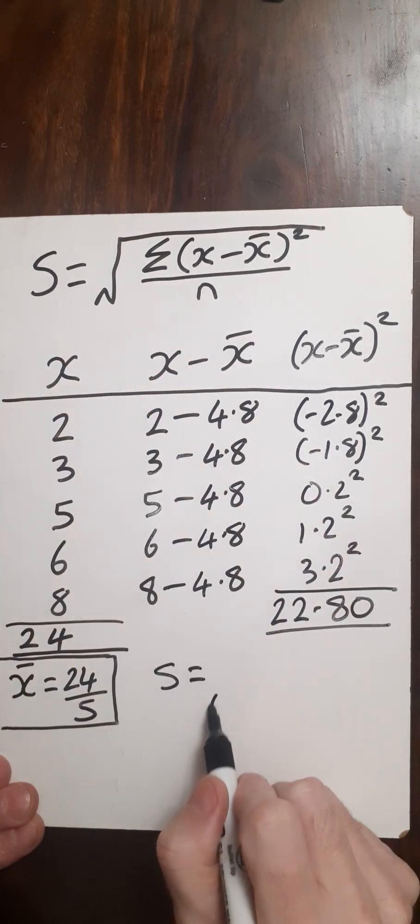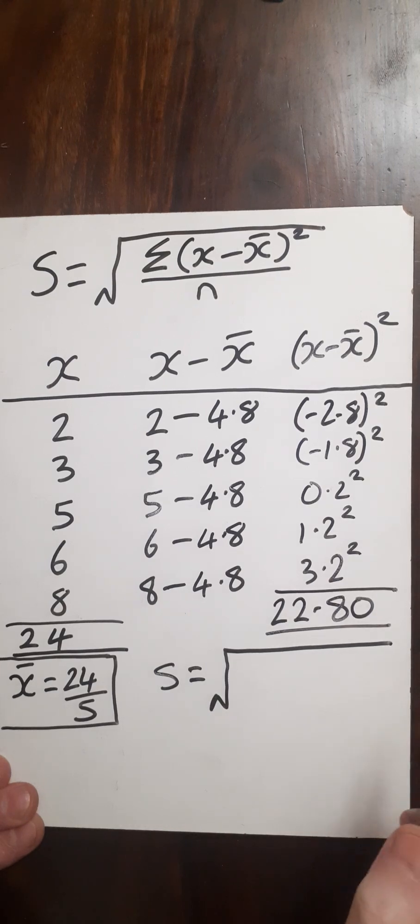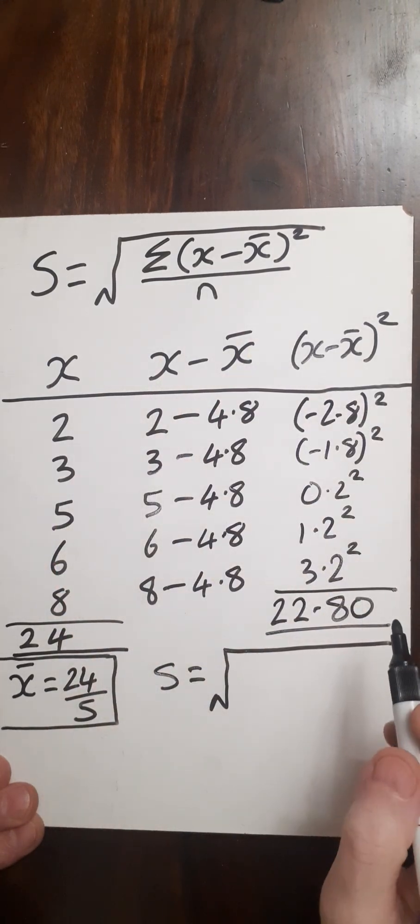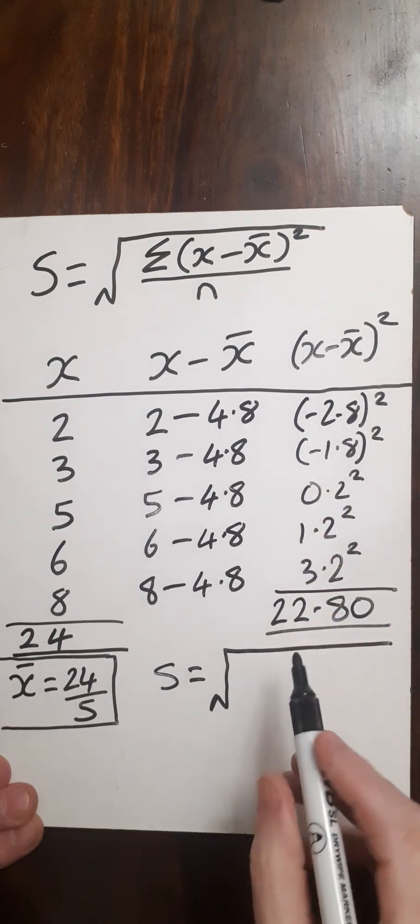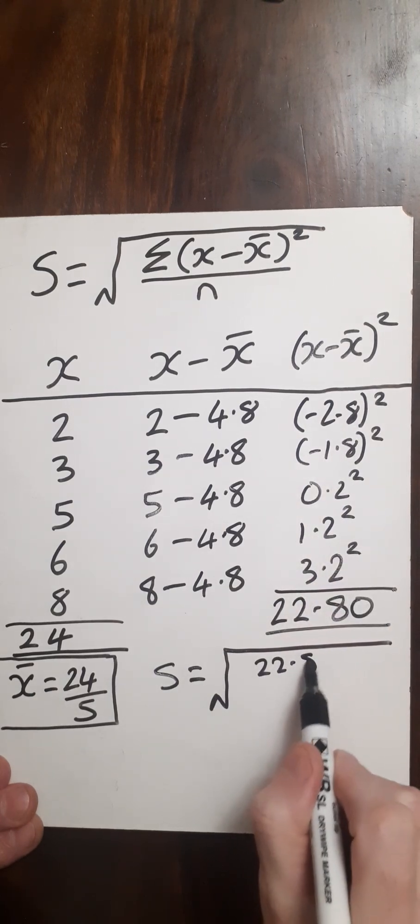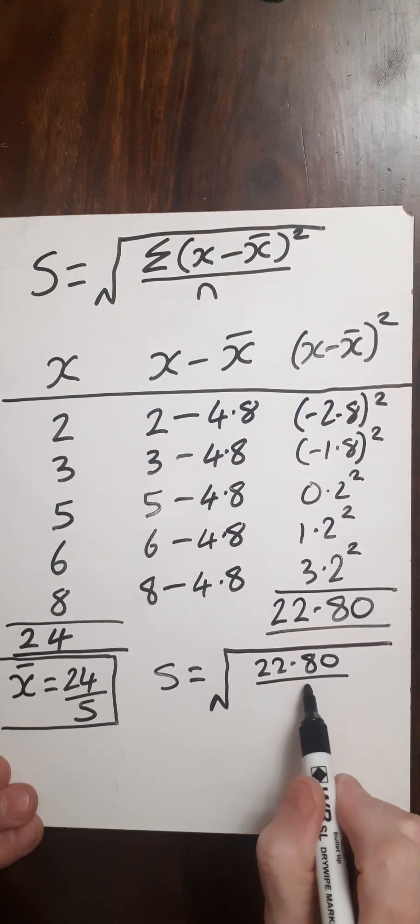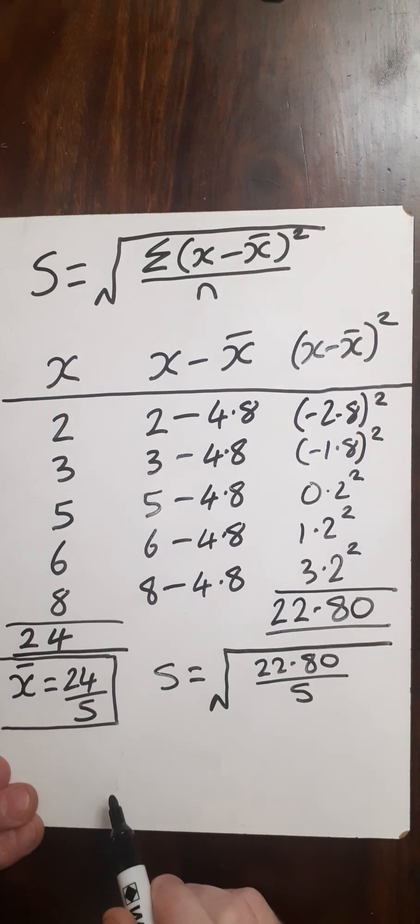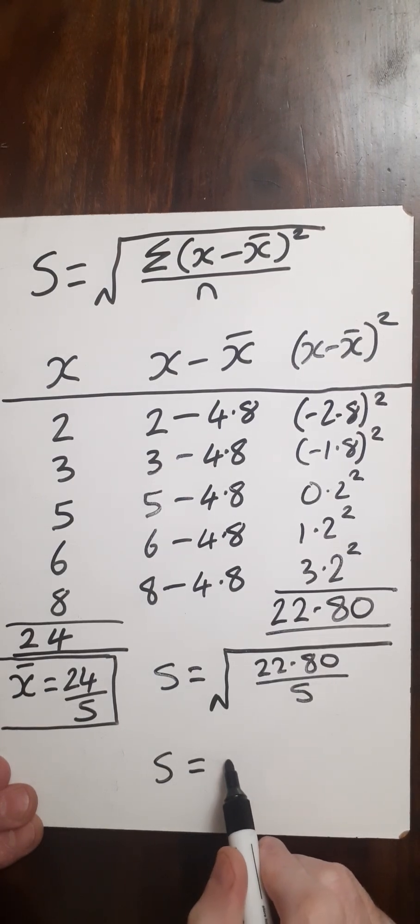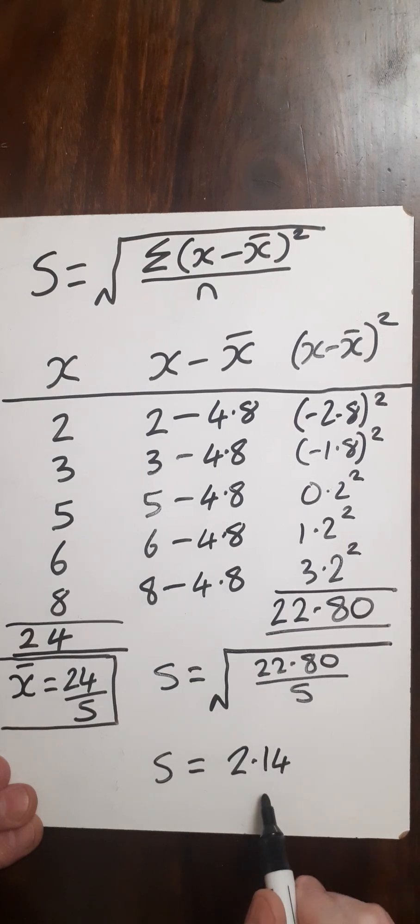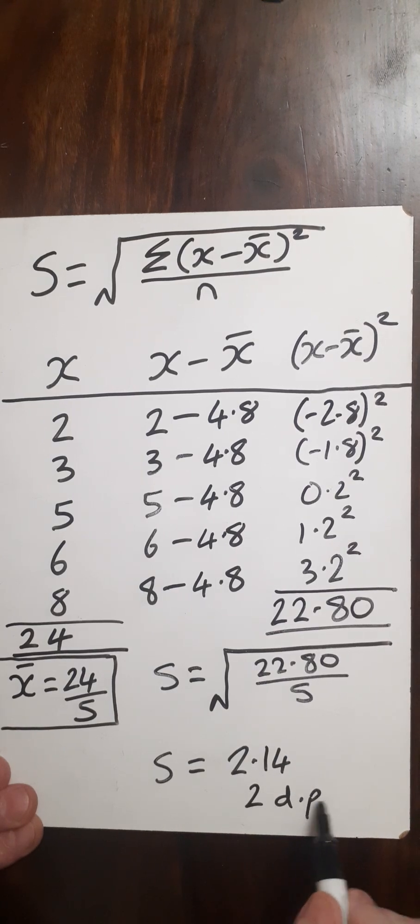So I've got S equals, that's my standard deviation, square root of the sum of the differences of X and the mean. So here, all these added up come to 22.8 divided by how many there is, which is five. Put that into my calculator. I'll get my standard deviation is approximately 2.14 to two decimal places.